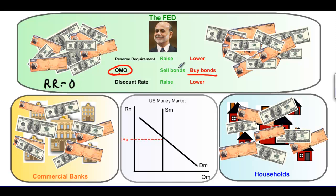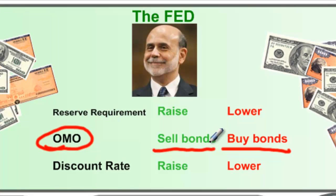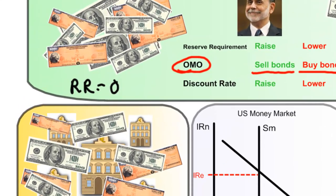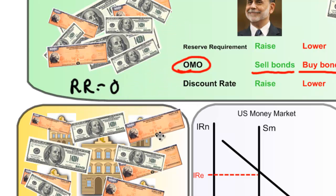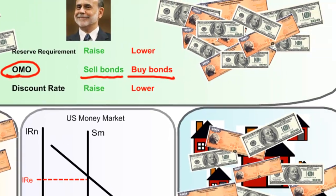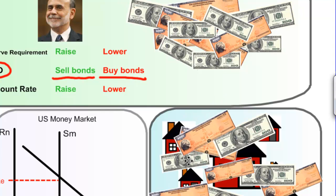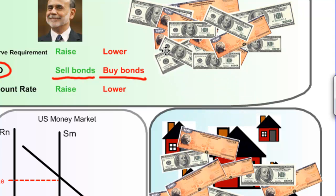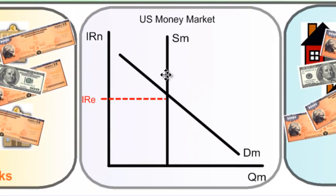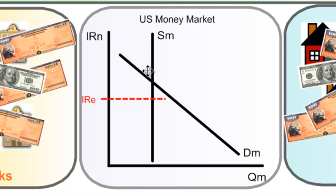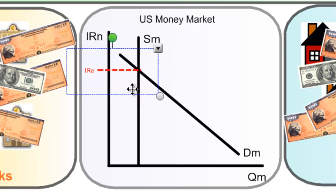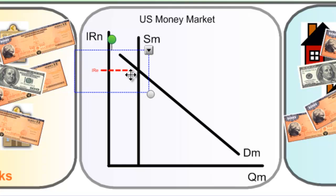Predictably, if buying bonds increases the supply of money, then selling government bonds decreases the supply of money. If the Federal Reserve sells bonds to commercial banks, money flows from commercial banks to the Fed in exchange for illiquid bonds — there is now less money in commercial banks to be loaned to households. If the Fed sells bonds to households, bonds go into household pockets and money comes out, leaving less money in circulation. The level of consumption and investment falls. A sale of government bonds by the Fed decreases the money supply and causes the interest rate to rise. This is called a contractionary monetary policy, very regularly used to bring down inflation, since less money means less overall spending and less aggregate demand.